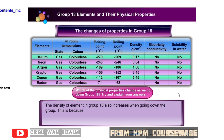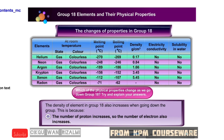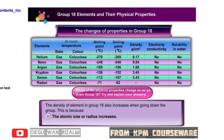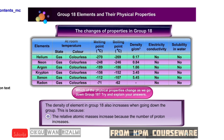The density of elements in group 18 also increases when going down the group. This happens because the number of protons increases, and the number of electrons will also increase. This makes the number of shells increase to fill the electrons, so the atomic size or radius will also increase. As a result, the densities of the gases increase. This also makes the relative atomic masses increase because the number of protons increases. Click on the blinking button to proceed.